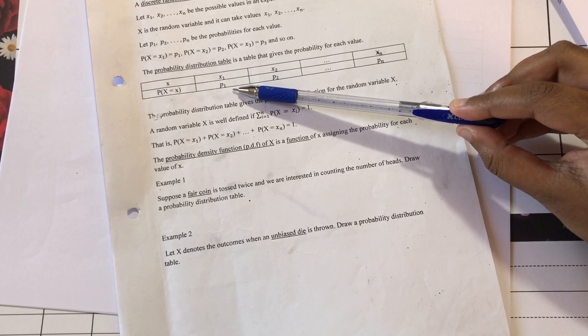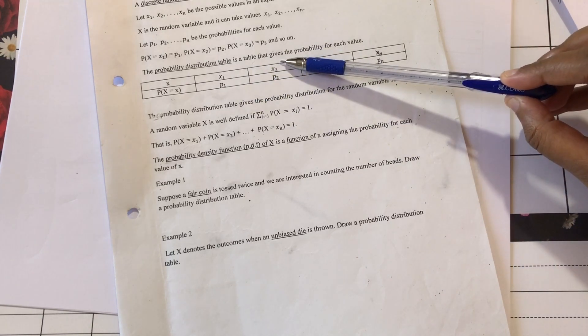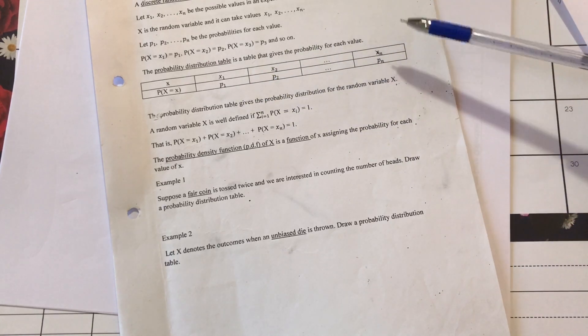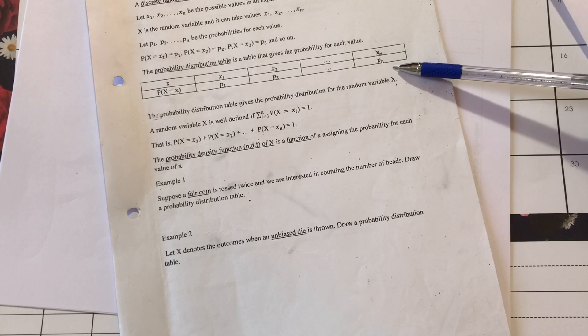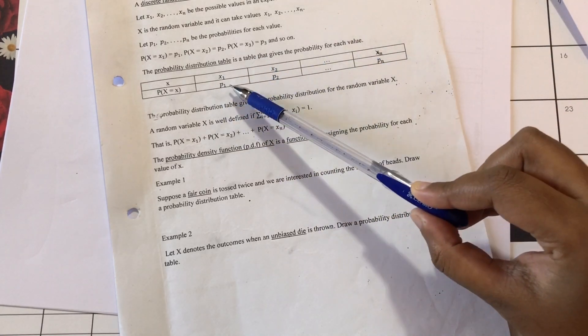x1 is assigned a probability of p1, x2 is assigned a probability of p2, xn is assigned a probability of pn. And if we add all the probabilities, it should be equal to 1.